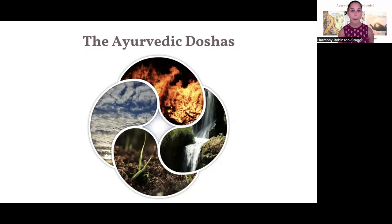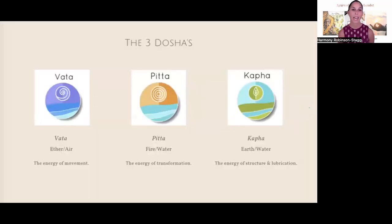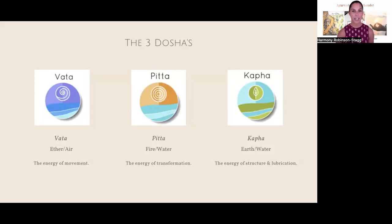Vata is made up of ether and air, and it's the dosha of movement. Pitta is made up of fire and water, and it's the dosha of transformation. Kapha is made up of earth and water, and it's the dosha of substance. Now that we have some insight into the five elements, we can determine our unique combination of these elements that influence our state of being.